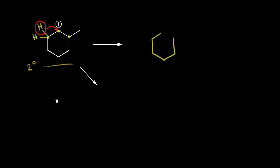I'll draw in the ring and put in the methyl group over on the right. There was already a hydrogen on the carbon marked in magenta, so let me draw in that hydrogen. The hydride in red is going to move onto that carbon as well. That leaves one hydrogen on the carbon in green, and since we took a bond away from it, that carbon now has a plus one formal charge. So we still have a secondary carbocation — not an improvement upon our original secondary carbocation.